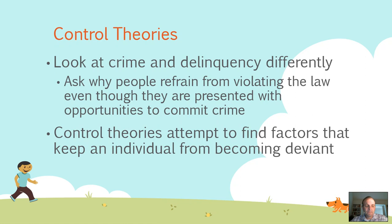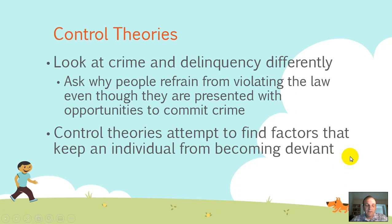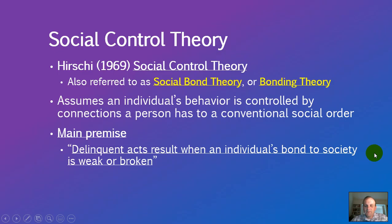Everybody has the opportunity to commit crime on any given day — just walking down the street you could steal a bike, break into a car, or steal something out of a mailbox. You go to the store and you can take something off the shelves and not pay for it. Control theorists recognize that and are essentially attempting to assess what stops the majority of people from doing that — what factors keep an individual from becoming deviant, delinquent, or criminal.